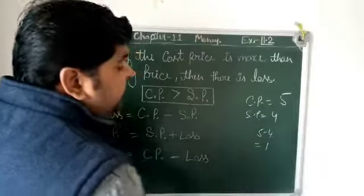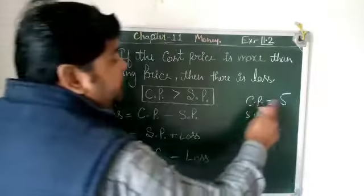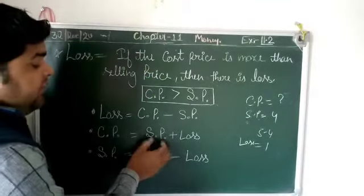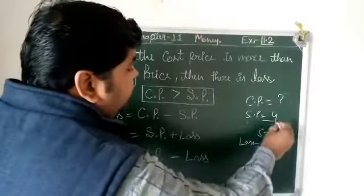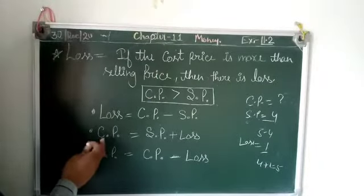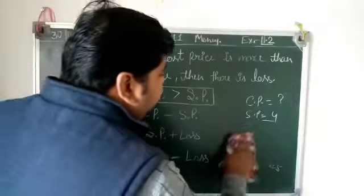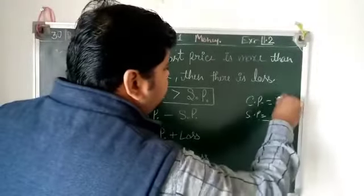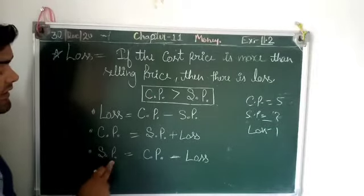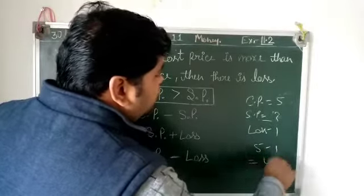The loss formula is: Loss = CP minus SP. So CP 5 minus SP 4 gives a loss of 1 rupee. When CP is missing — loss is 1 rupee and SP is 4 rupees — then CP = SP plus Loss, so 4 plus 1 equals 5. To find SP when CP and loss are given: SP = CP minus Loss. So 5 minus 1 equals 4, which is the selling price.